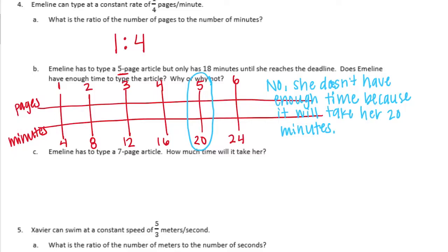Emmeline has to type a 7 page article. How much time will it take her? So since we've already made it to 6, let's just add one on. 7. And then if we add that, that would be 28 minutes. So it would take her 28 minutes to type a 7 page article.